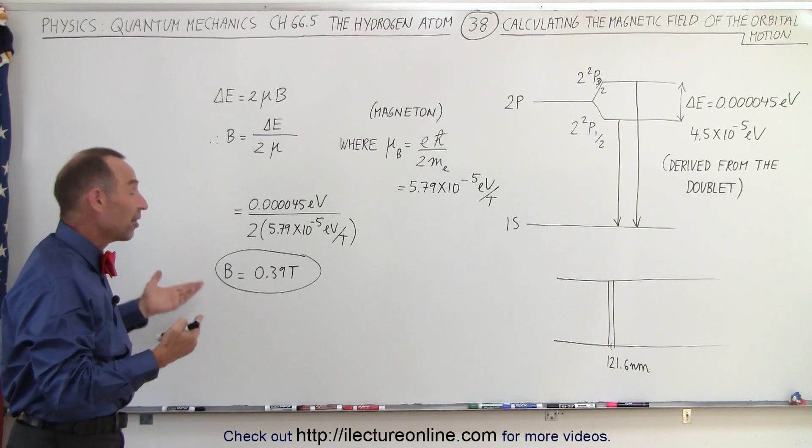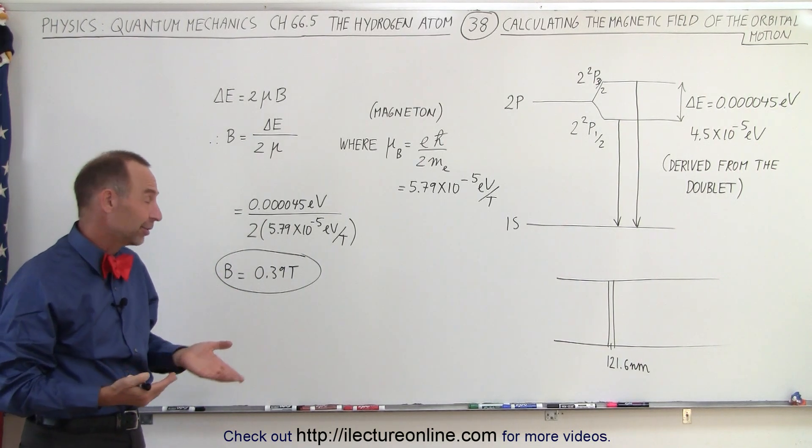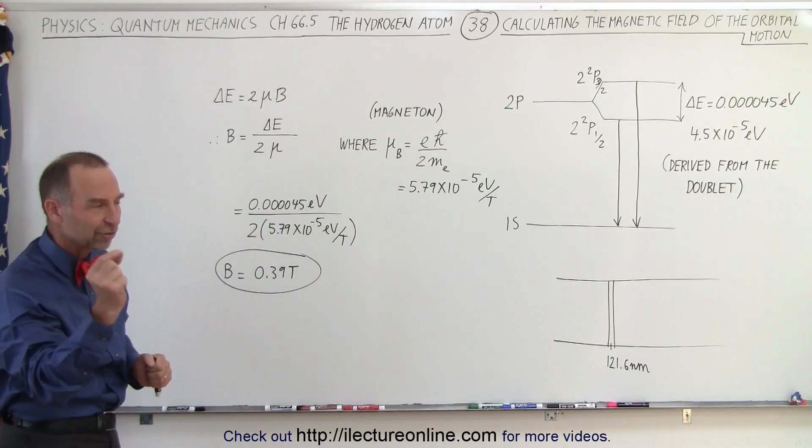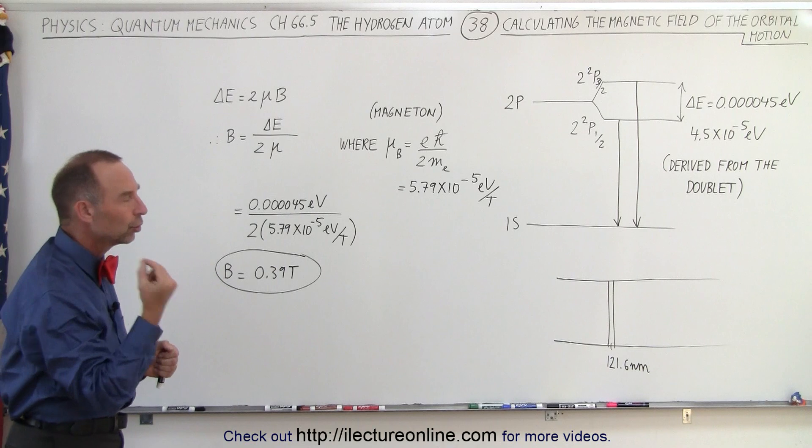That's probably in the order of 10,000 times the magnetic field of the earth. So you can see that's something that's quite significant caused by one single electron orbiting along the nucleus.